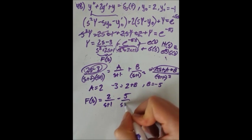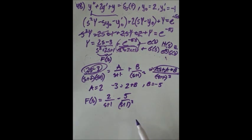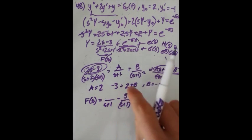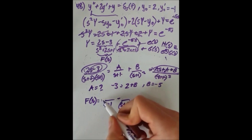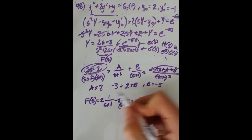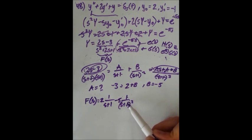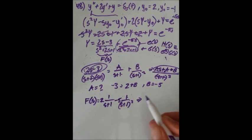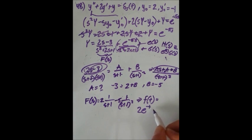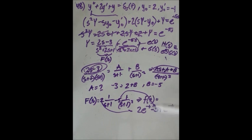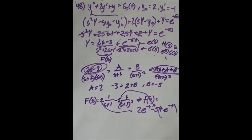Consulting the table for the inverse Laplace transform: scalar numerators stay in front. The inverse transform of 2 over (s plus 1) is 2e to the minus t, and the inverse transform of 5 over (s plus 1) squared is 5t times e to the minus t, since 1 over (s plus 1) squared corresponds to t e to the minus t. So lowercase f(t) equals 2e to the minus t minus 5t e to the minus t.